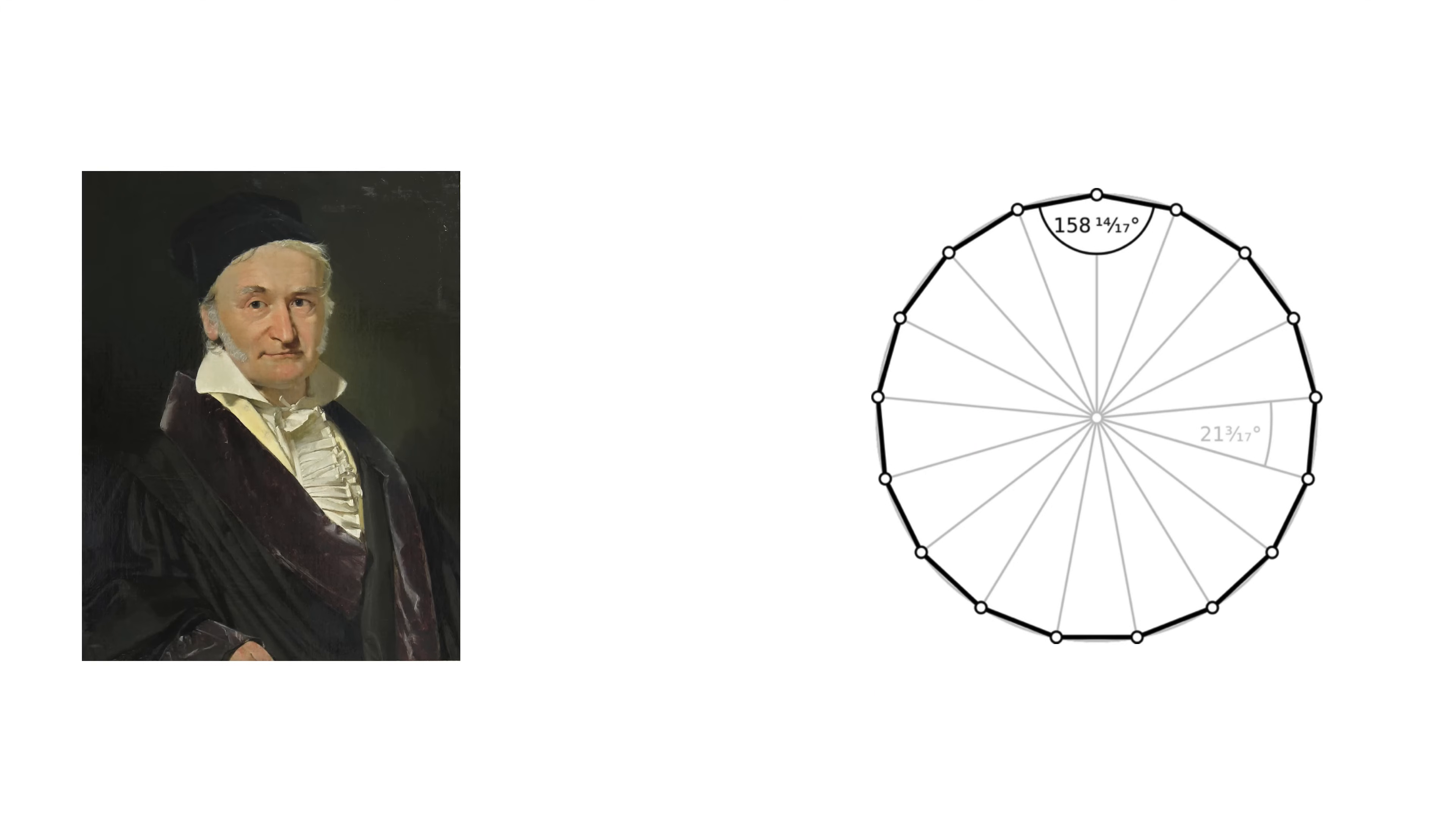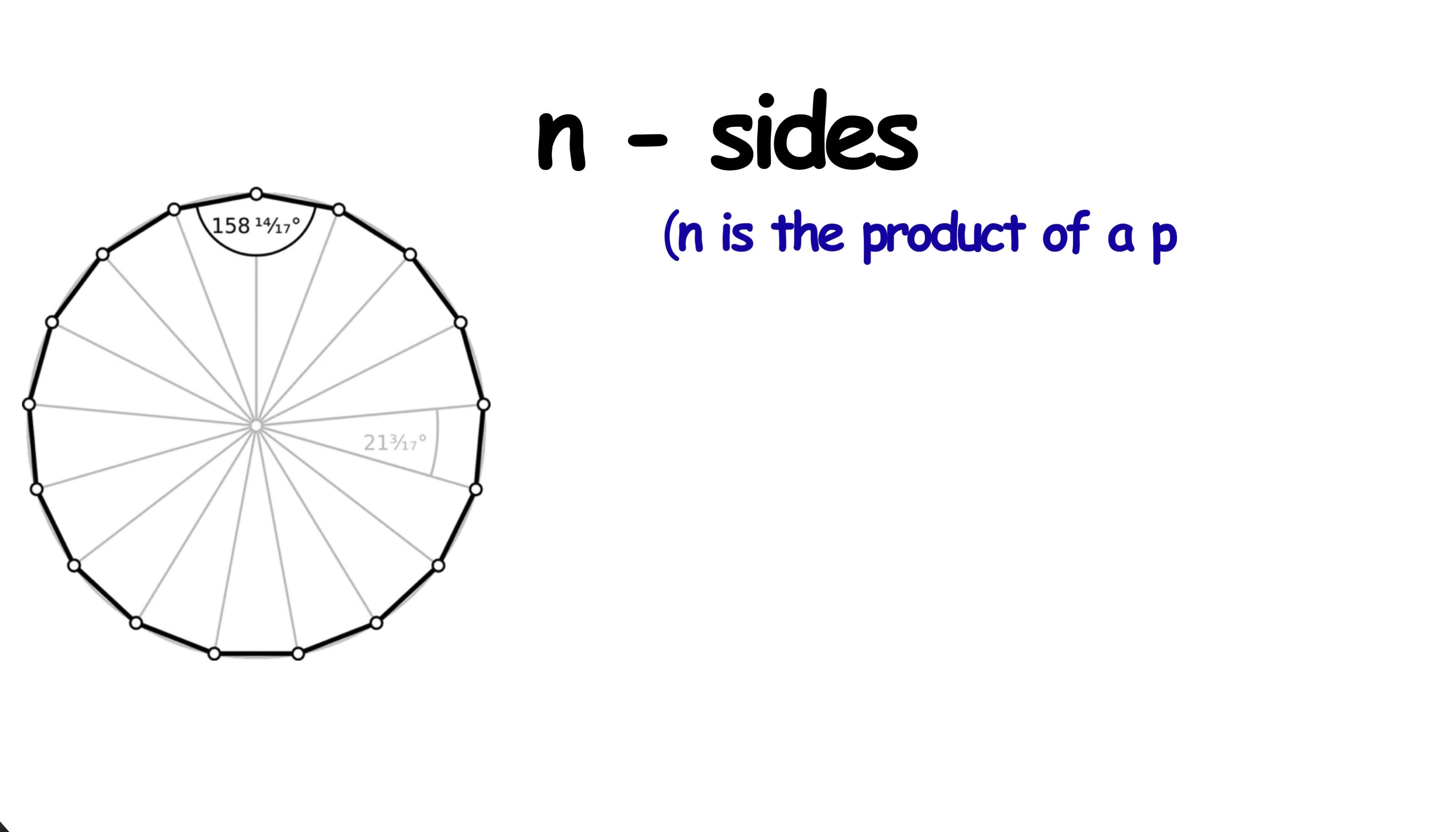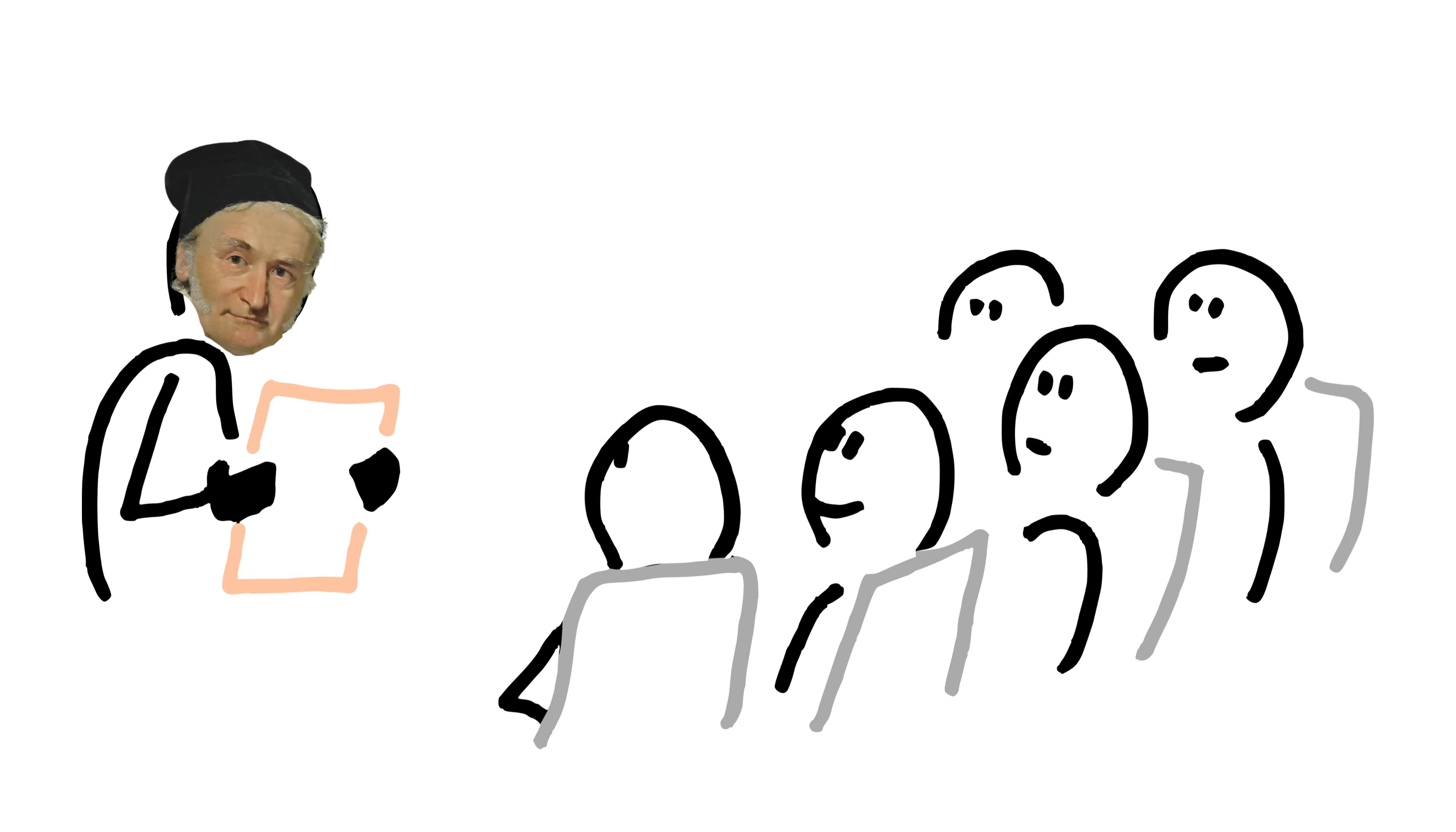Gauss showed that the construction was possible because 17 is a Fermat prime. He showed that a regular polygon with n sides is constructible with a compass and straightedge if n is the product of a power of two and distinct Fermat primes. N equals two to the power of k times p1 times p2 and so on, where k and s are non-negative integers and each pi is a distinct Fermat prime. This condition is met when n equals 17. This discovery brought immediate fame to Carl Friedrich Gauss and laid the foundation for his later work Disquisitiones Arithmeticae, making him a central figure in modern mathematics.